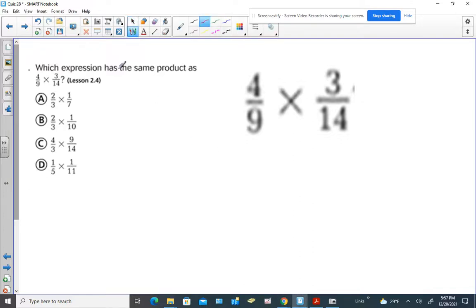Hey everybody, which expression has the same product as 4 ninths times 3 fourteenths? And they're showing you a bunch of options.